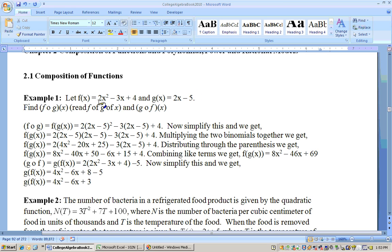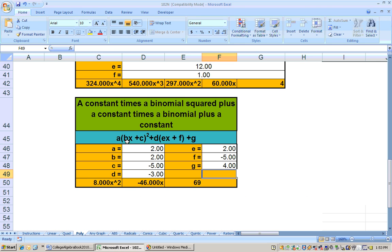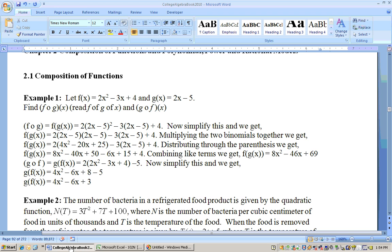It will be 2 times (2x minus 5) squared minus 3 times (2x minus 5) plus 4. If it says to simplify, you can simplify by hand or go to the quad sheet, put in your coefficients, and it will simplify to get 8x squared minus 46x plus 69.